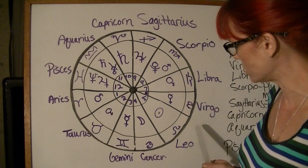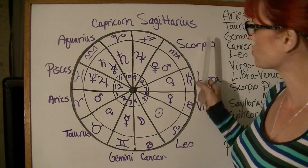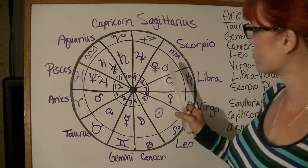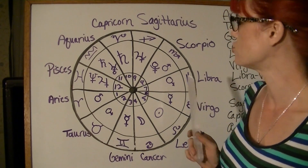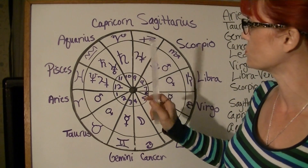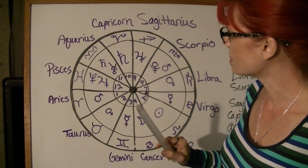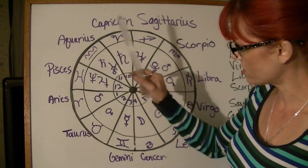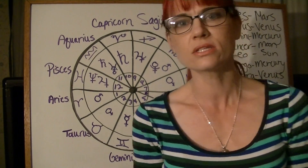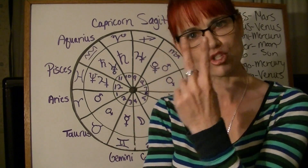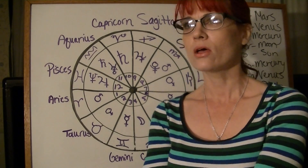Leo is ruled by the Sun, Virgo by Mercury, Libra by Venus. Scorpio is ruled by both Pluto and Mars. Sagittarius is ruled by Jupiter, Capricorn by Saturn, Aquarius is ruled by both Uranus and Saturn, and Pisces is ruled by Neptune and Jupiter.